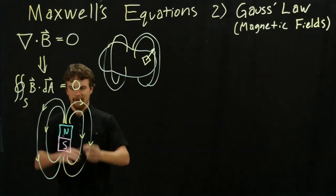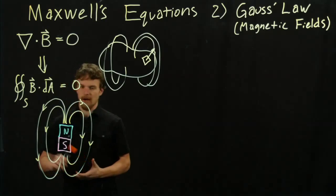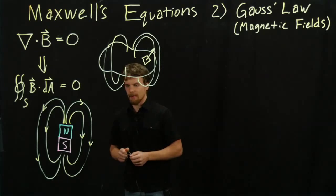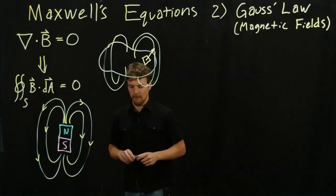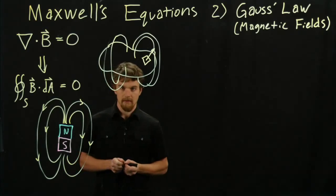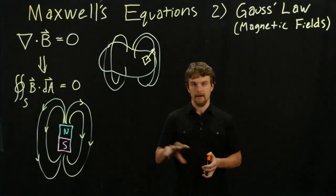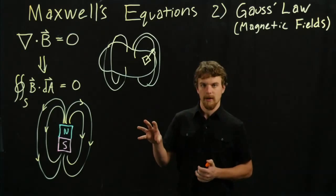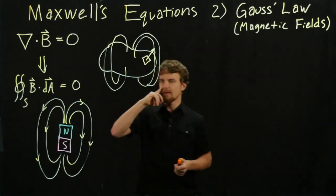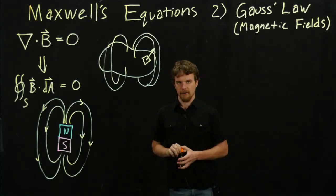What Gauss's law is saying is that no matter what shape we draw around this, the flux through the surface of that shape is zero. Let's think about what that implies. Last week we said that the flux through any surface of an electric field was dependent on the charge enclosed by that space. In this case we're saying it's zero, so that kind of implies there is no such thing as magnetic charge.